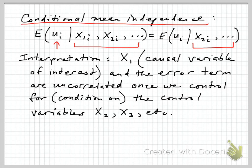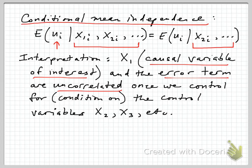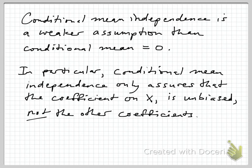What this means is that x1 — our causal variable of interest — and the error term u are uncorrelated once we control for or condition on all the control variables. So we're not saying that x1 is uncorrelated with the error term by itself; there could be omitted variable bias. But once we put those control variables in, we have wiped out that source of correlation, and then we get an unbiased estimate of beta 1.